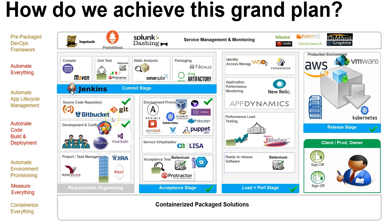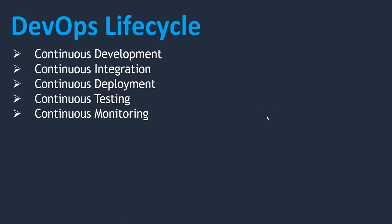I've kept only the relevant tools under each section — apart from these, there are many other tools available. We need to learn one tool at each category. Before looking at which tools we'll use, let's see what the steps are in the DevOps lifecycle. In DevOps there is continuous development, continuous integration, continuous deployment, continuous testing, and continuous monitoring — these are the five steps involved.